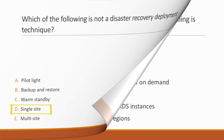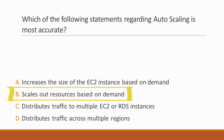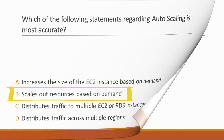Next question: Which of the following statements regarding auto-scaling is most accurate? Options: A. Increases the size of the EC2 instance based on demand, B. Scales out resources based on demand, C. Distributes traffic to multiple EC2 or RDS instances, D. Distributes traffic across multiple regions. Correct answer is option B, because auto-scaling automatically adjusts the capacity to maintain performance across multiple resources.